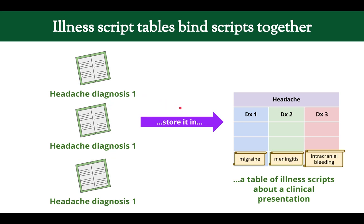We create this network by binding illness scripts together in a table of illness scripts. This table has 'headache' at the top — the headache table — and we have three illness scripts to put in it: migraines, meningitis, and intracranial bleeding. When you're reading about various diagnoses that could cause headache, it's good to store information in these illness script tables because it allows you to compare and contrast various diseases, as you'll soon see.